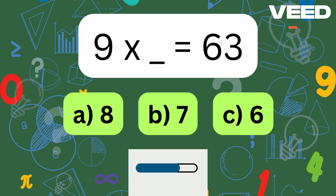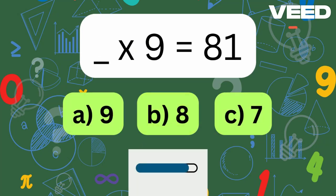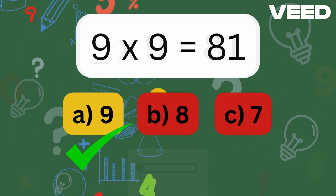9 times what is 63? 9 times 7 is equal to 63. What times 9 is 81? 9 times 9 is equal to 81.